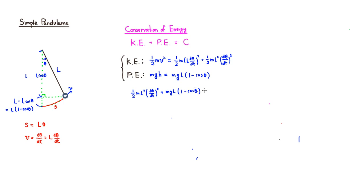Adding kinetic and potential energy together: ½ml²(dθ/dt)² plus mgl(1 − cosθ) equals some constant c. To make it look a little better, we'll take the derivative of this equation with respect to t.